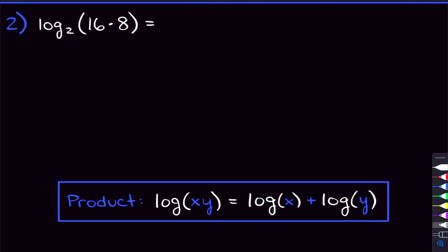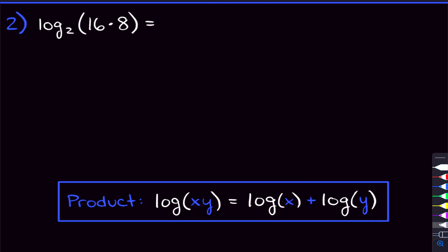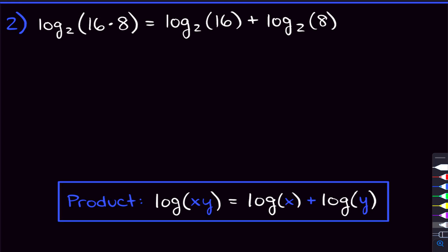Moving on to the second problem. You can see we have two things being multiplied inside the log, and so what the product property tells us is that we can expand this into two separate logs — we just have to add them. Log base two of 16 times 8 expands into log base two of 16 plus log base two of 8. Make sure to add them, not subtract them — that's for quotients.